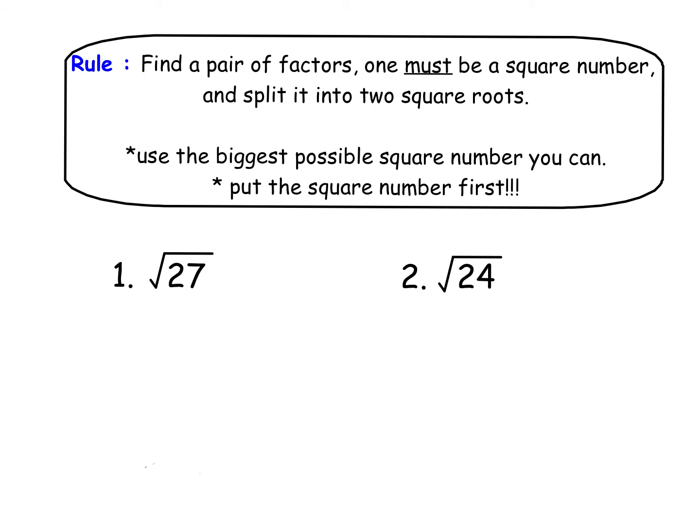So let's start with some simple ones. To simplify a surd, this is your method. You have to find a pair of factors, numbers that multiply, for example, to my first one of 27. One of them has got to be a square number, and we're going to split it into two square roots. So the other tip is, in any kind of simplifying, think about when you're simplifying fractions or ratios, if you can find the biggest number or the biggest factor first, it means less working. We're always looking for the biggest possible square number that can go into our number. And my little tip is, I always say, to put the square number first. It's not essential, but it just helps with the simplification.